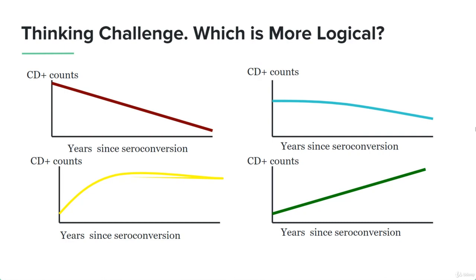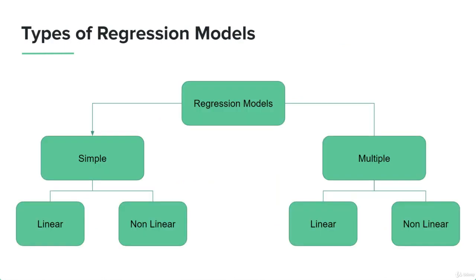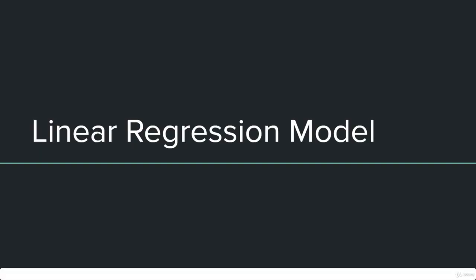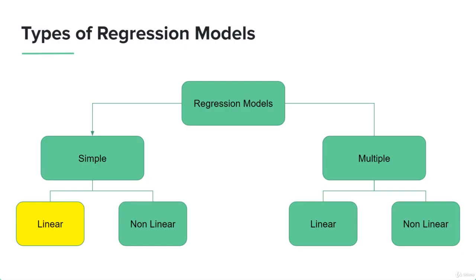So let's think about the different types of regression models. Regression models can be divided into two broad categories: simple regression models and multiple regression models. Furthermore, we're going to divide the simple and multiple regression models into linear and nonlinear functions, which will define the functional form of these models. So let's talk about the simple linear regression model.